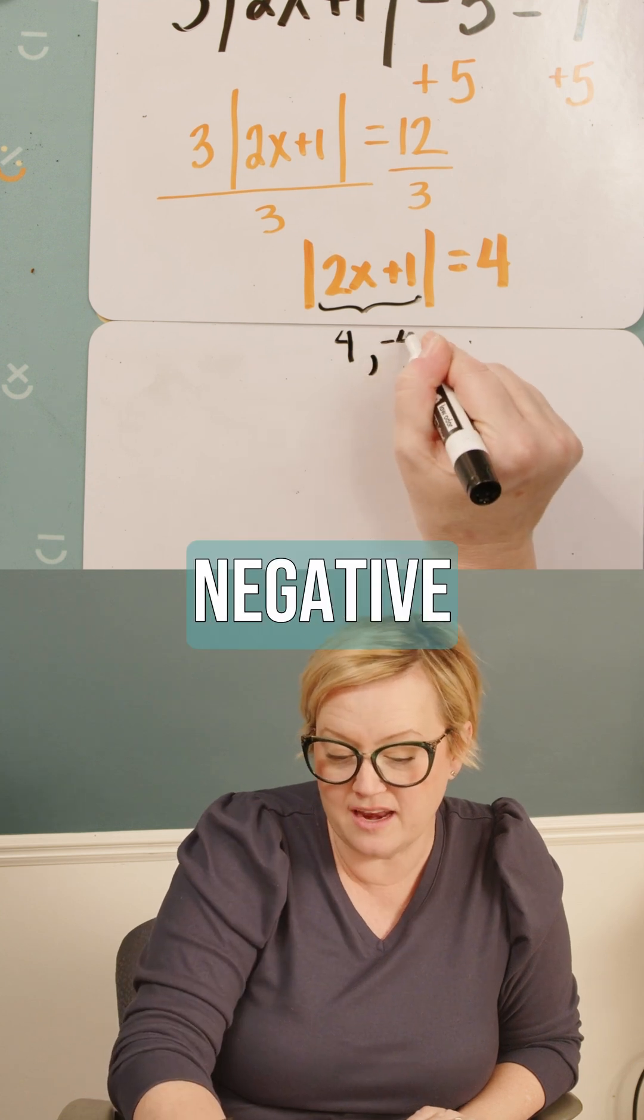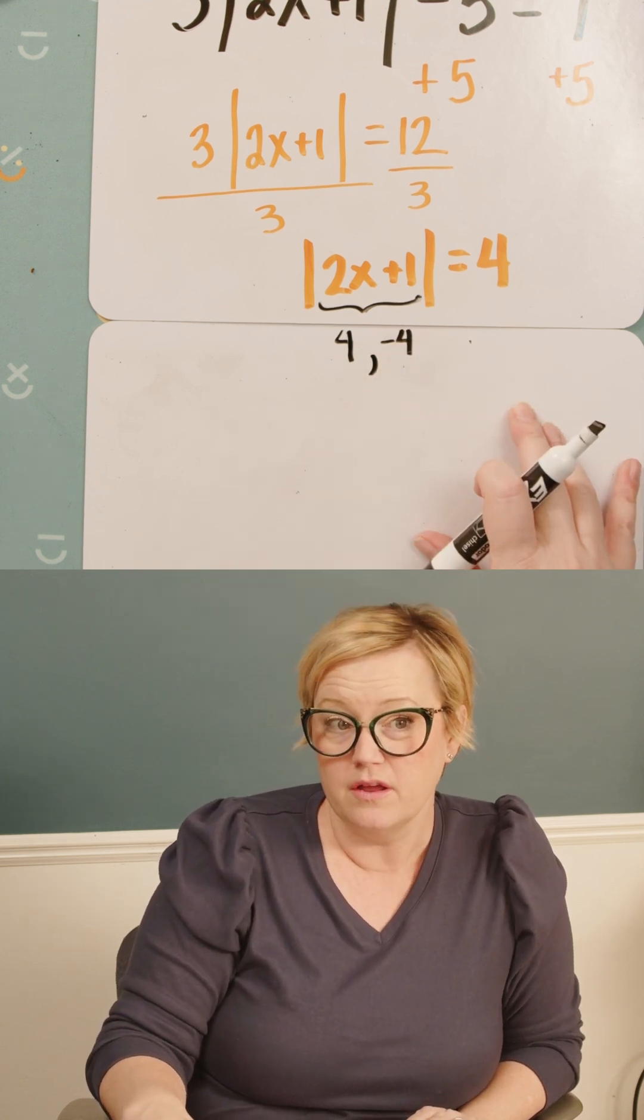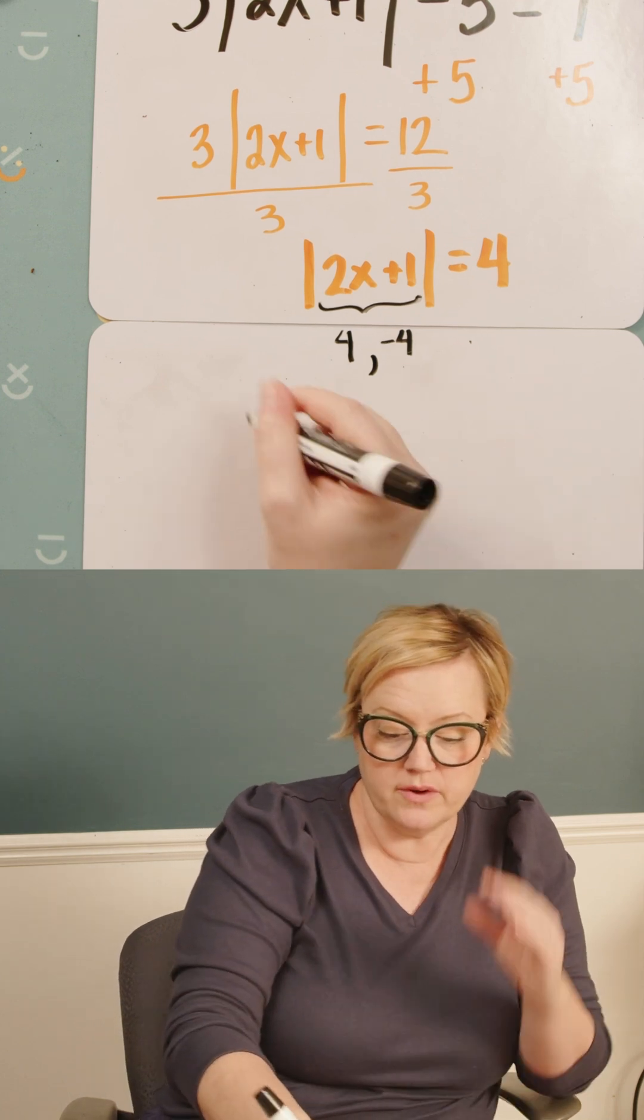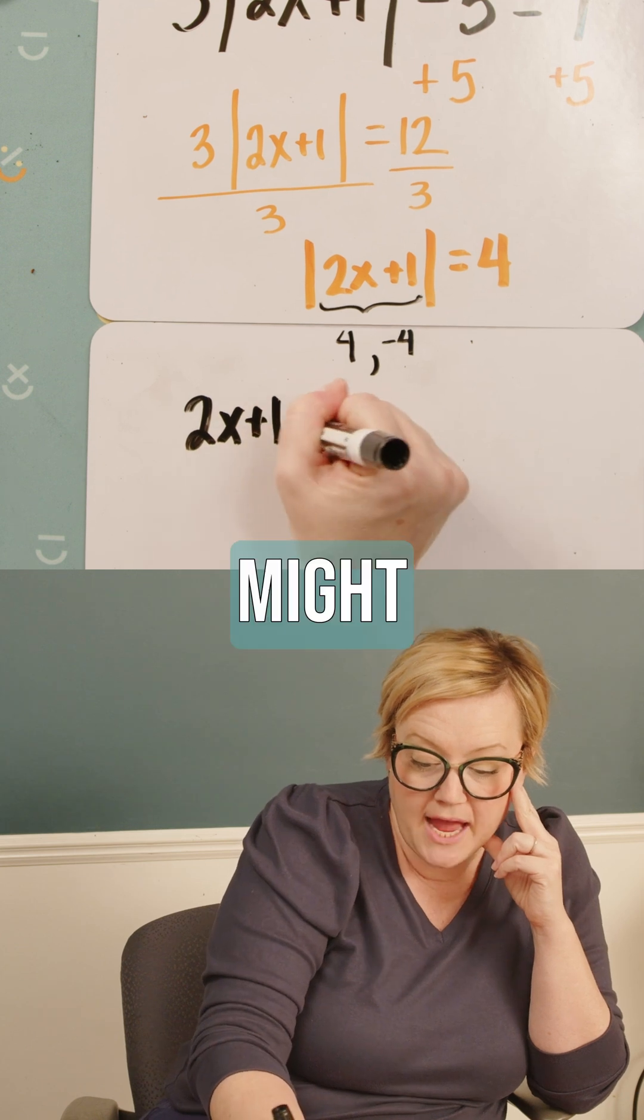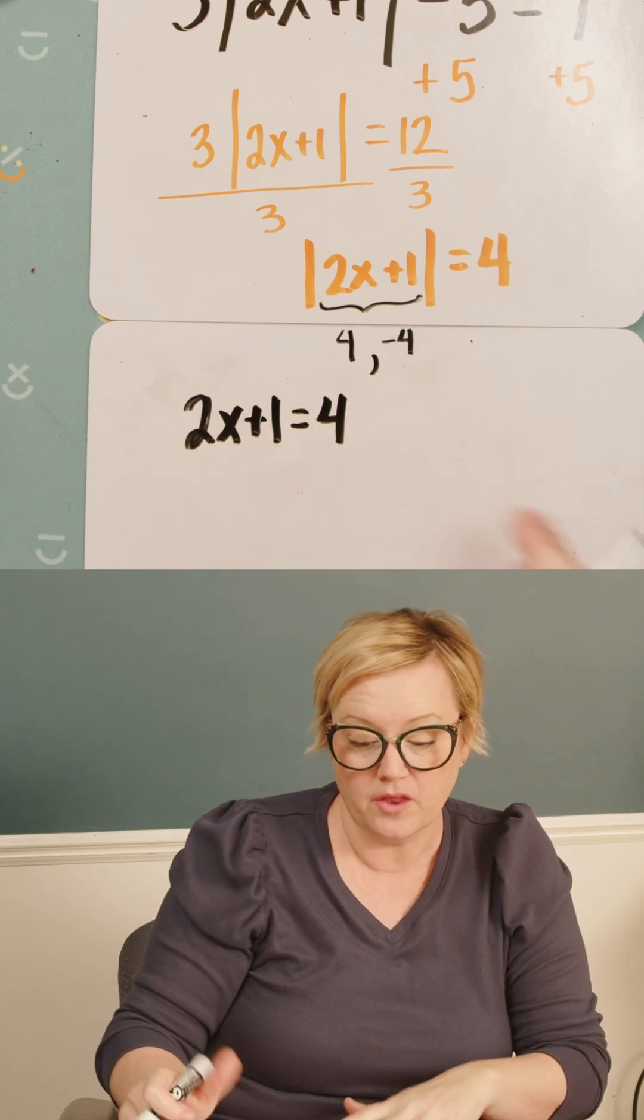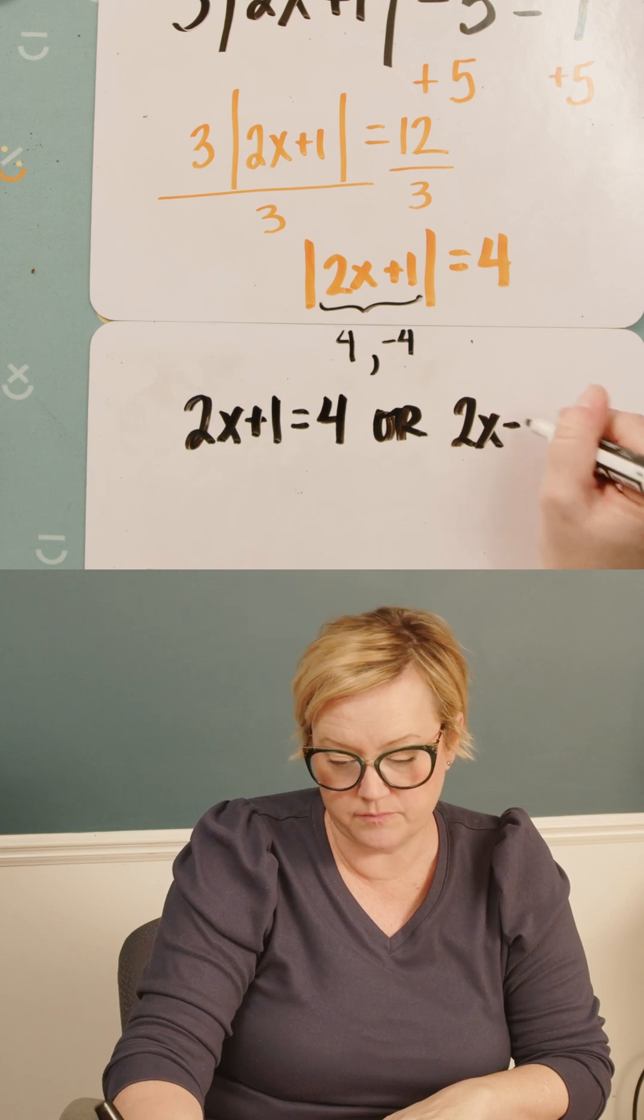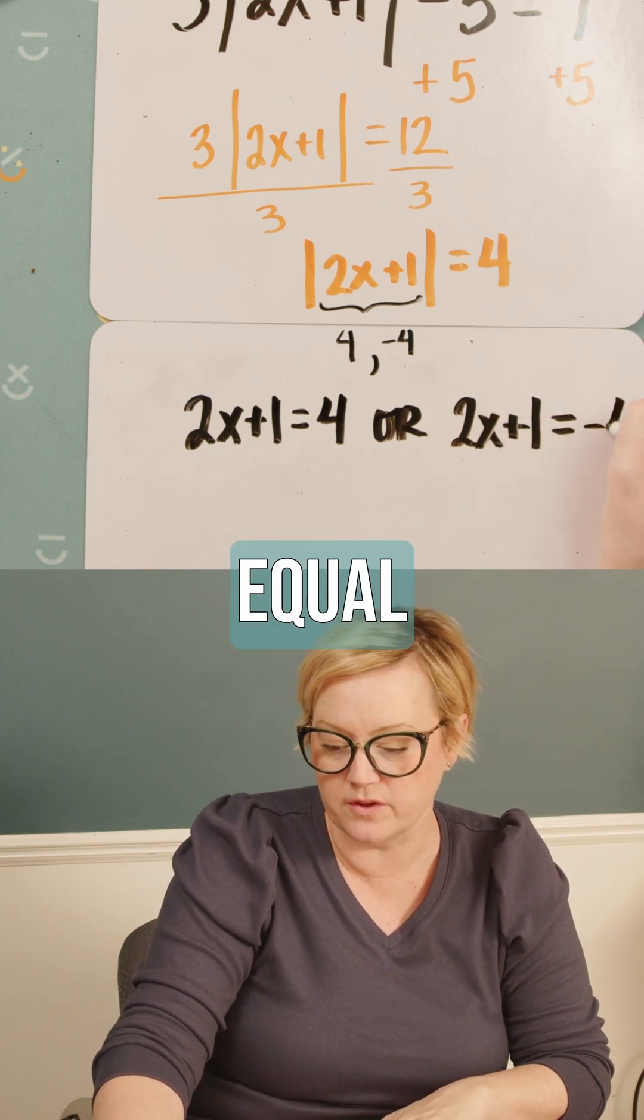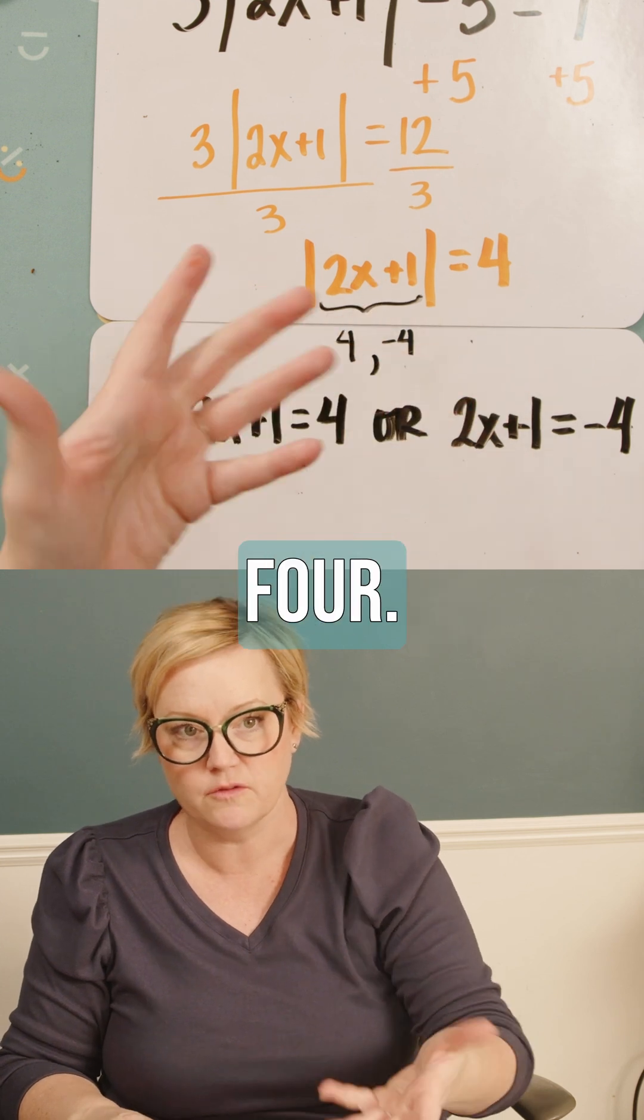If it equals negative four, the absolute value would also be four. So now you have to split this. So now I know that 2x+1 might actually equal four, or 2x+1 might actually equal negative four. And then when you take the absolute value, it's four.